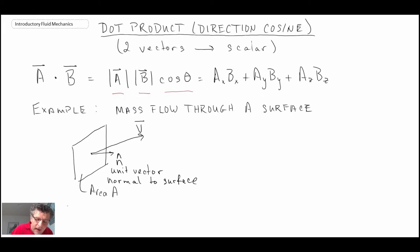And so we can re-express the area a as being the scalar value of area a multiplied by that unit normal vector. And that would give us a representation for area a as a vector. Now, what we can do with the dot product, I mentioned, it enables us to determine the mass flow rate through a surface.